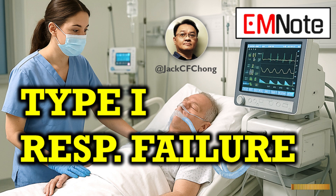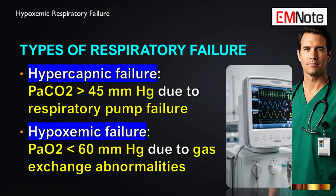Clinically, what is the precise measure that tells us we're dealing with hypoxemic respiratory failure? It's all about inadequate oxygenation in the arterial blood. The partial pressure of oxygen — the PaO2 — has to be less than 60 millimeters of mercury. That numeric threshold is the non-negotiable definition. That 60 millimeters of mercury number is vital.